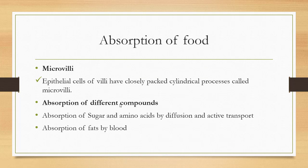The next one is microvilli. Epithelial cells of the villi have closely packed cylindrical processes called microvilli. The total area for absorption is increased due to villi and microvilli. The compounds absorbed here are sugars, amino acids, and fats. The absorption of sugar and amino acids takes place by diffusion and active transport.